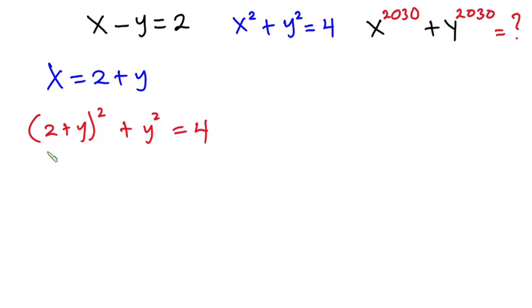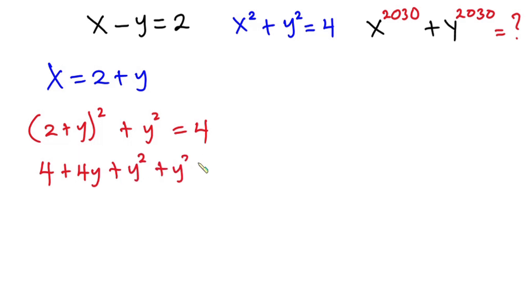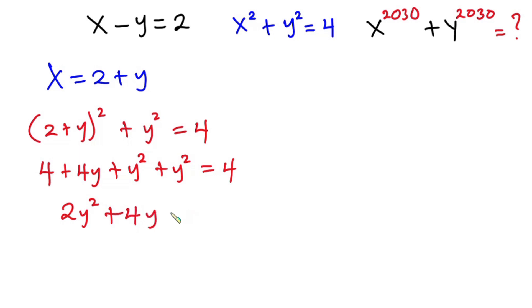Now let's expand this. So we have 4 plus 4y plus y to the second power plus y to the second power is equal to 4.